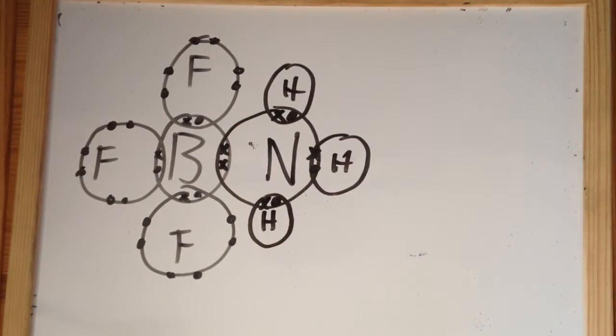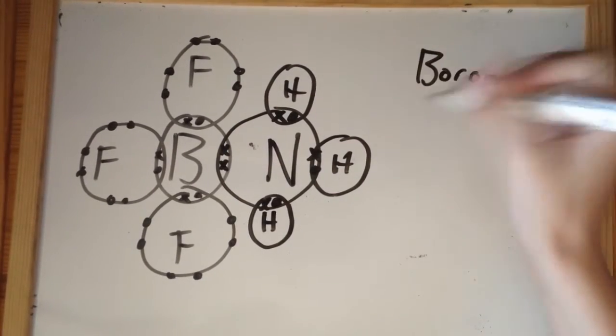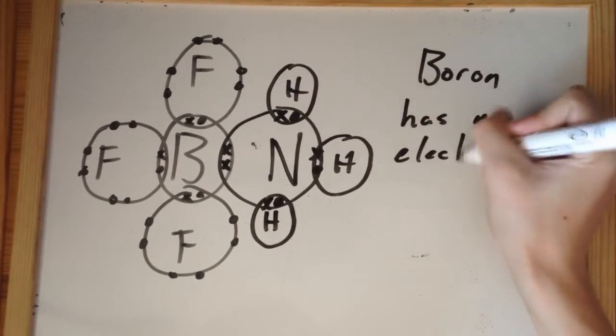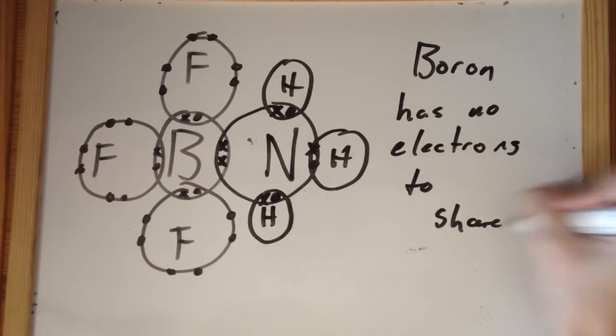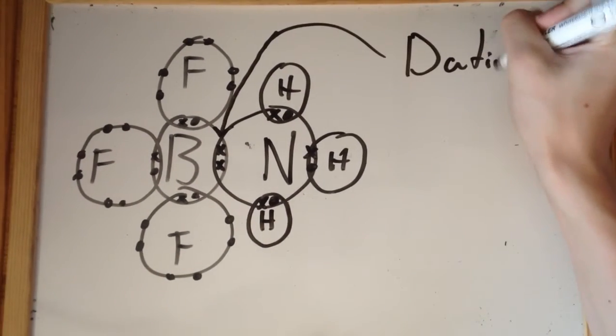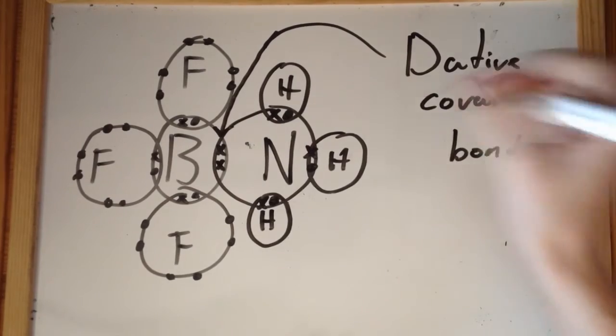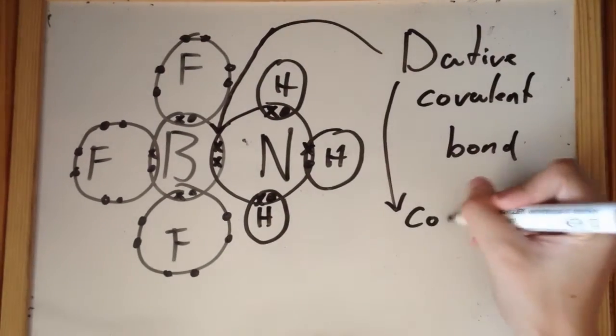From the diagram it looks like the molecules have simply shared their electrons. But boron has no spare electrons to share with nitrogen. This type of bond, called a dative covalent bond, is where both electrons in the pair that is shared originate from the same atom.